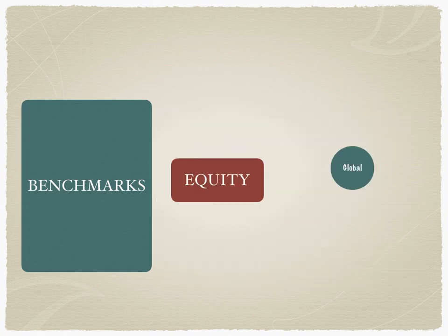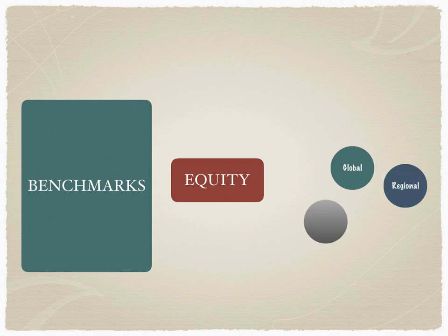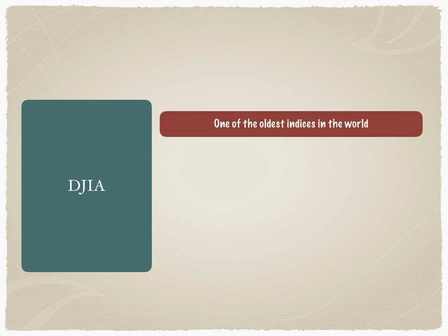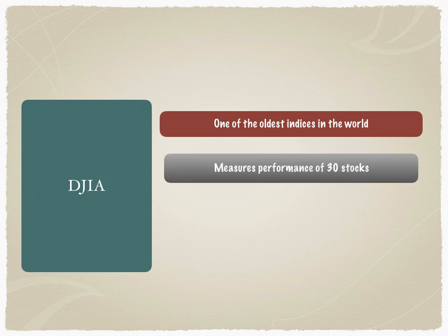The equity benchmarks could be of different types, created and shared by different agencies. These equity benchmarks could be global indices, regional indices, thematic indices, or even sectoral indices. The oldest benchmark used in the world, especially for investors in the United States market, is the DJIA — the Dow Jones Industrial Average. This index measures the performance of 30 stocks listed and traded in the US stock markets.